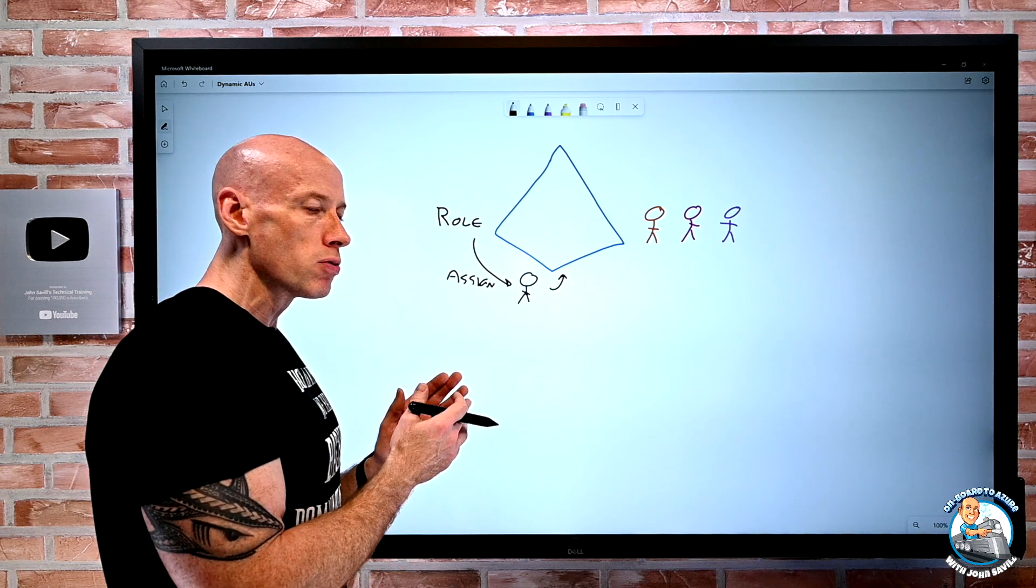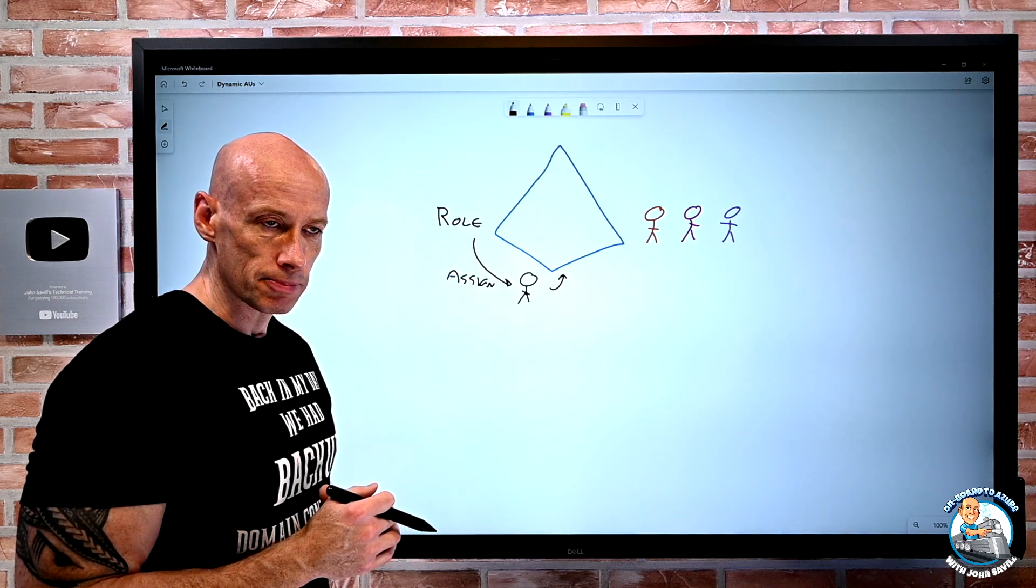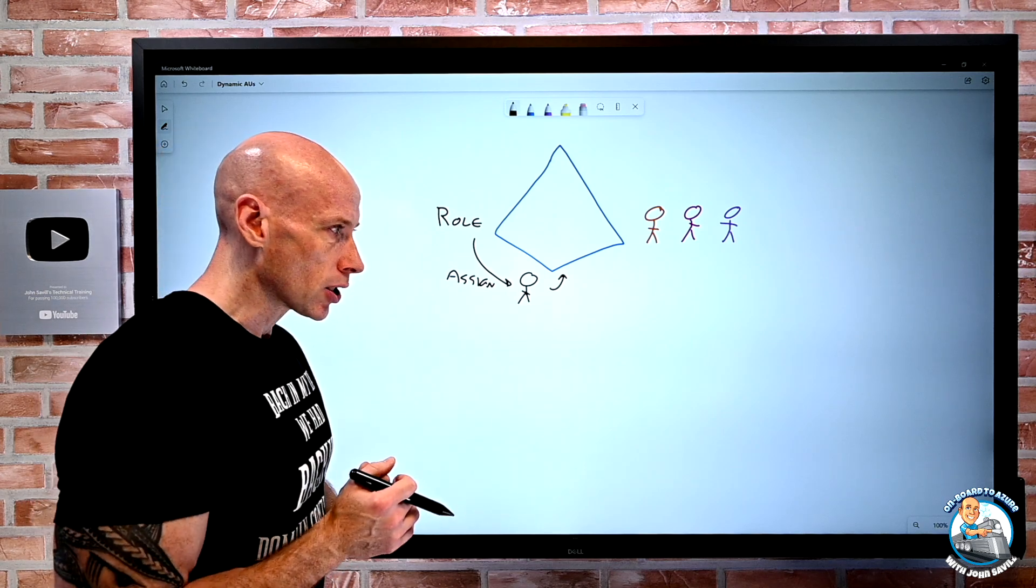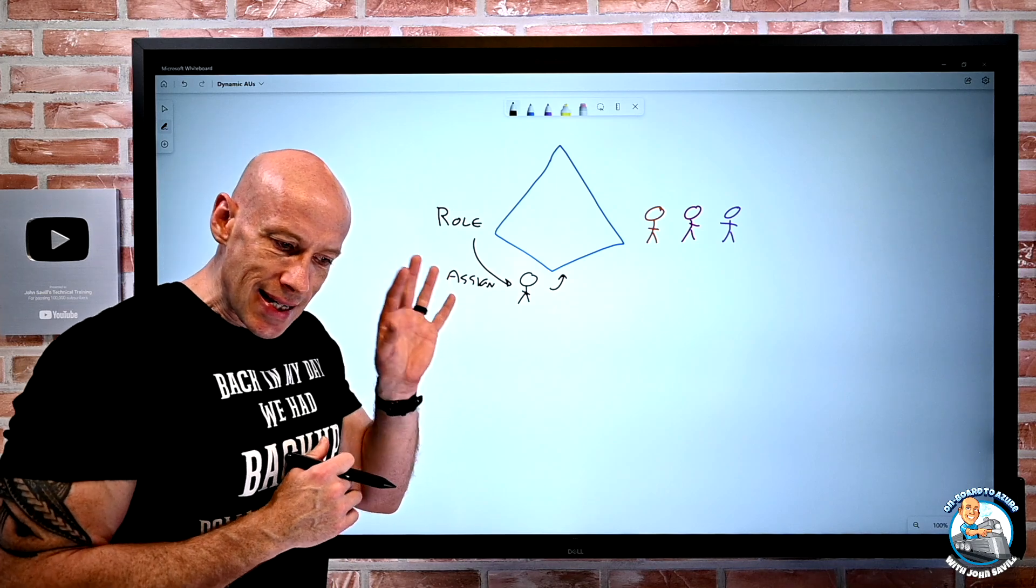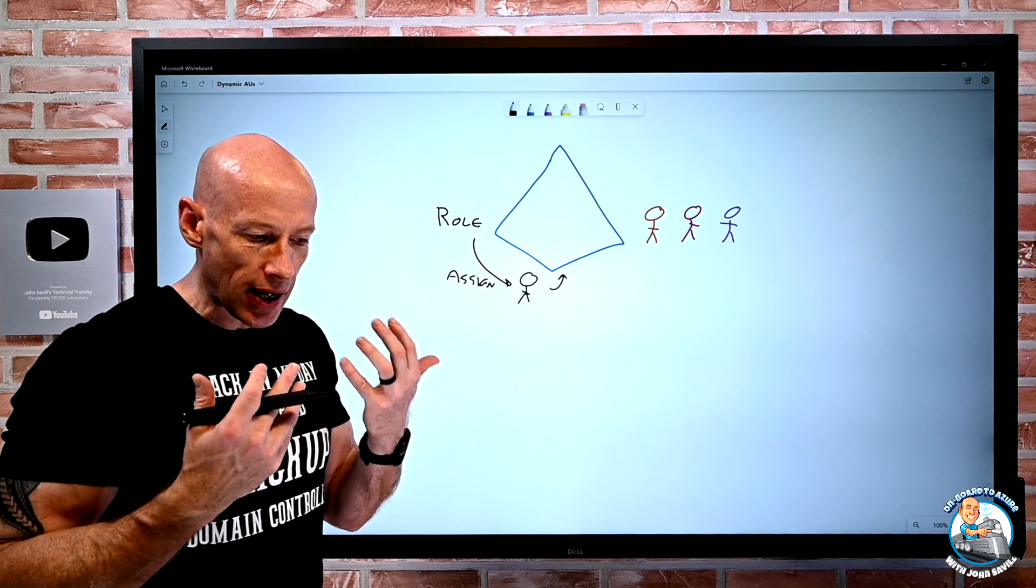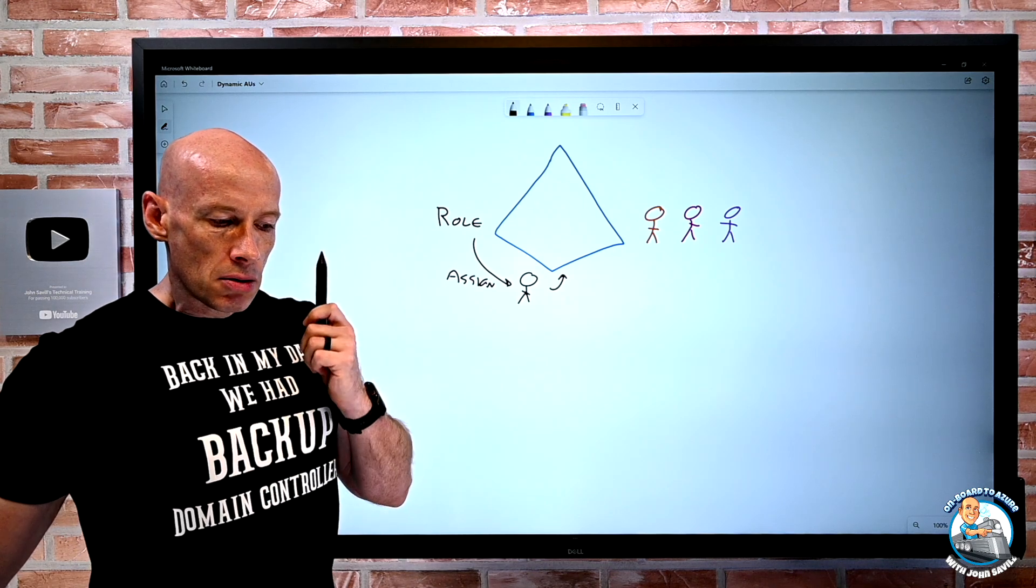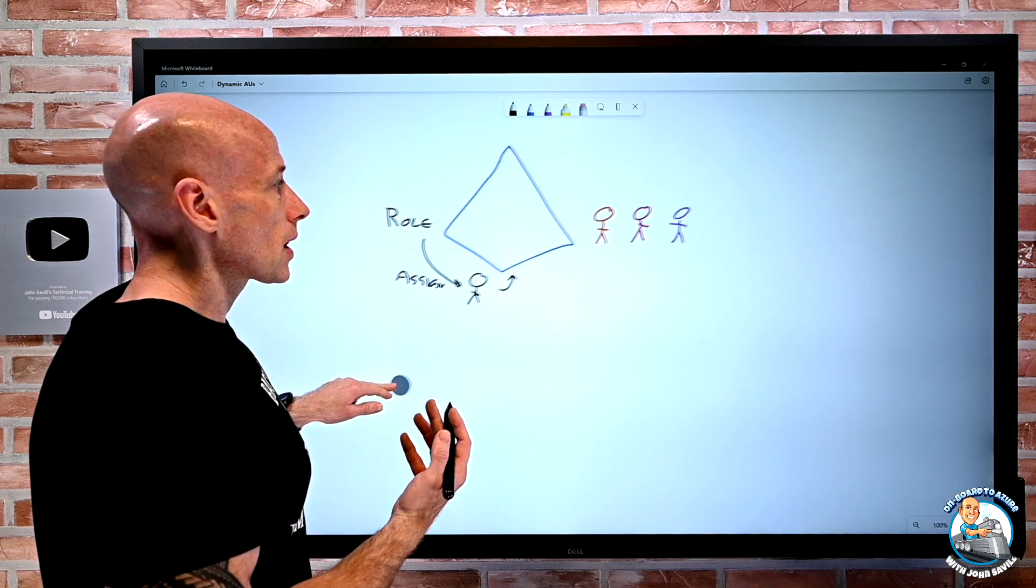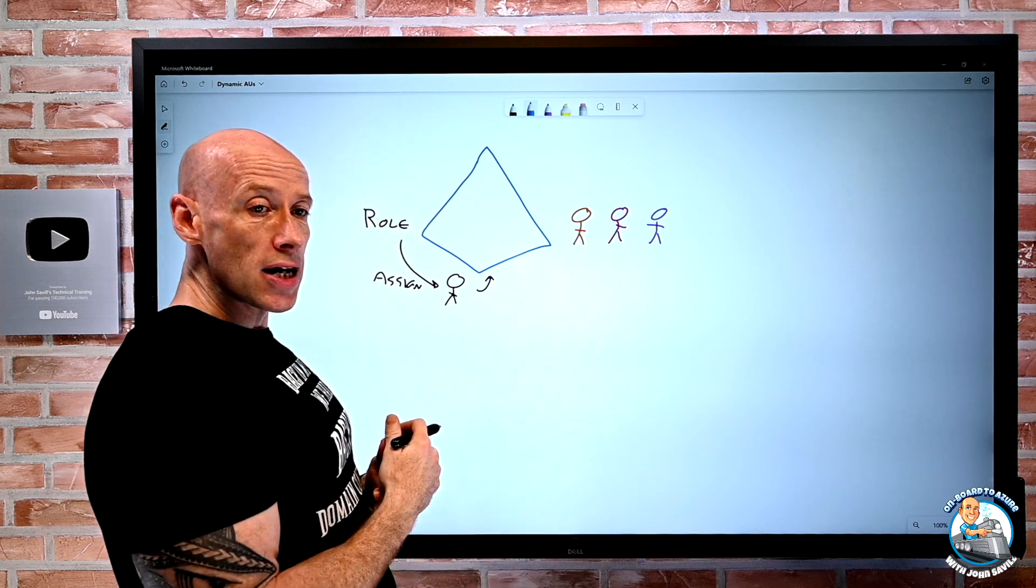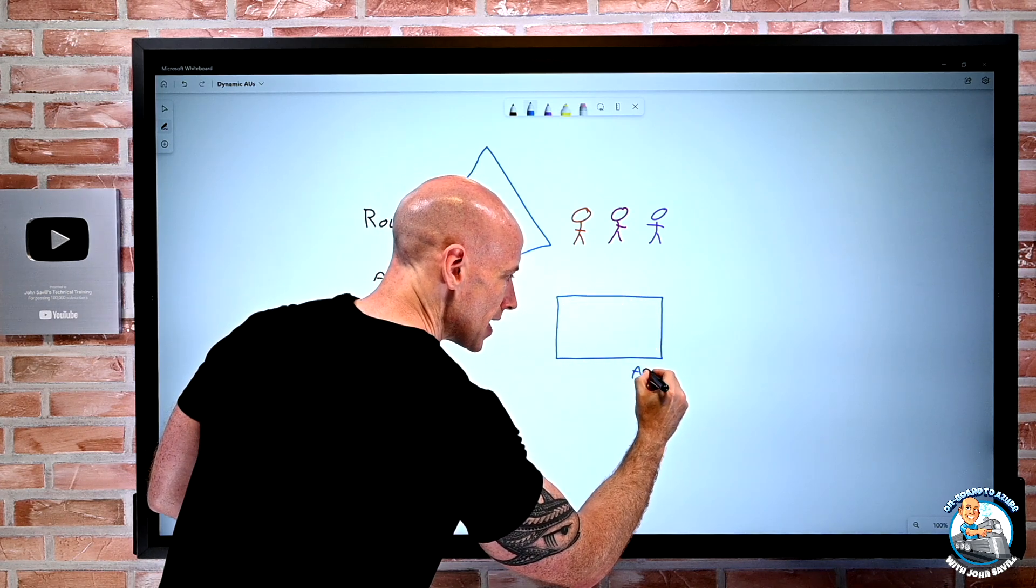What if I want a more granular assignment? I want to give this role to a user or set of users, but for a subset of the population, maybe people in a certain department or in a certain location. Because Azure AD doesn't have the same organizational unit hierarchy that you have in regular Active Directory, there's no concept of that. So what we have is the administrative unit. I can create multiple AUs. I can go ahead and create an administrative unit.